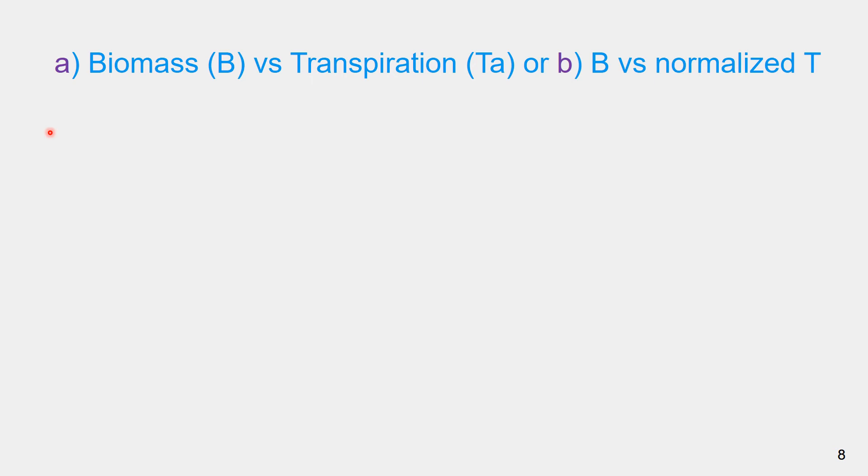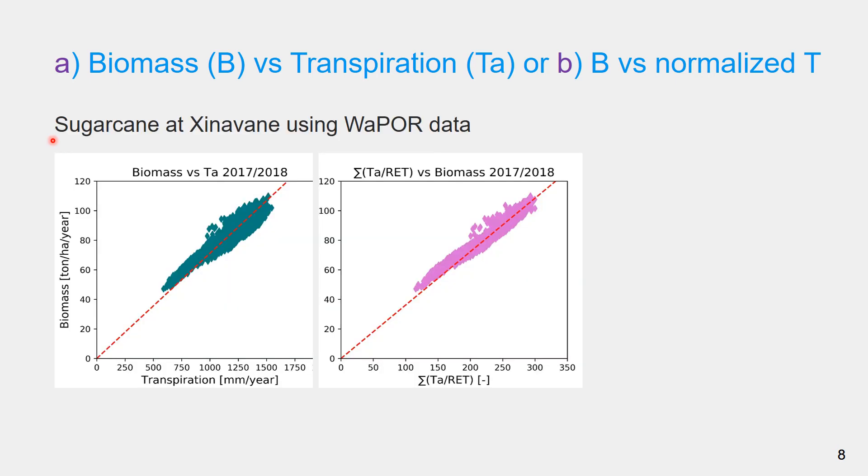Evapotranspiration is one of the remote sensing datasets on water consumption, production and climate which is hosted by FAO. The plot of above ground biomass versus transpiration as well as above ground biomass versus normalized transpiration using Vapor data shows straight lines passing through the origin which is a confirmation that Vapor datasets for this particular crop area as well as season agronomically make sense.